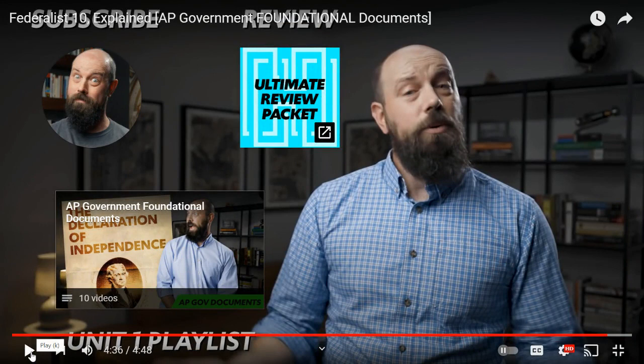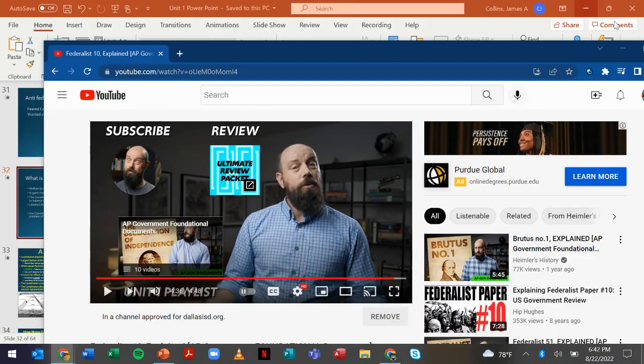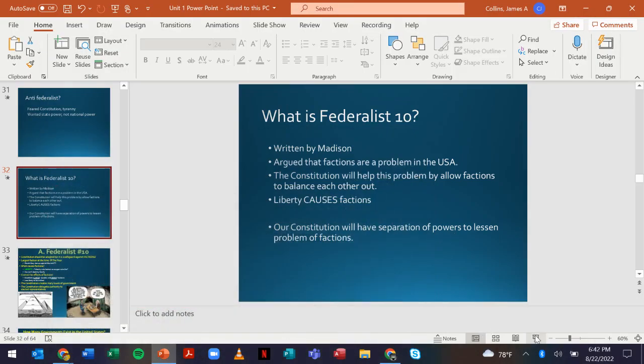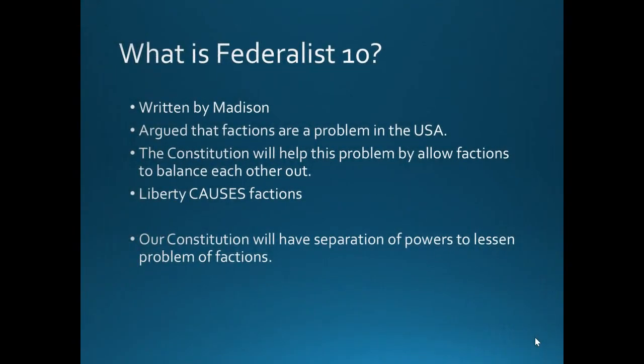So that's Federalist 10. You can't get rid of factions because to do so you'd get rid of liberty. But with all these factions competing with each other, that will help lessen the negative effects of factions. Madison also said that separation of powers will lessen the problems of faction — even if one dominant faction takes over, they'd still have trouble getting anything done because of separation of powers.